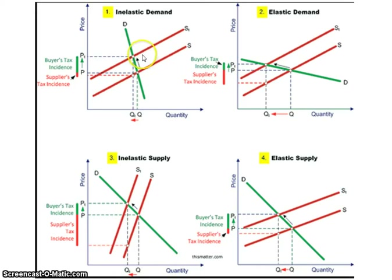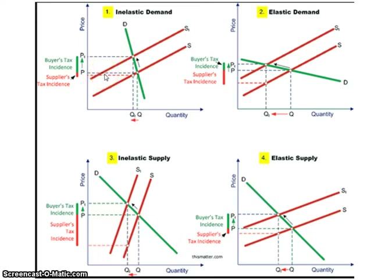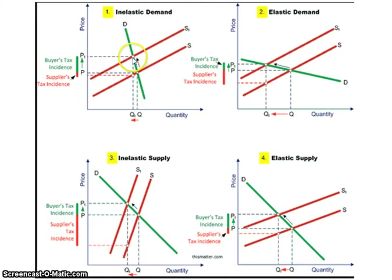When you shift your supply curve to the left because of the tax and look at the new quantity and new price that is created, you can see that the consumer has a much larger tax burden than the producer does. That's because they're willing to absorb that higher price — not a large number of people drop out and buy something different. The two boxes combined represent the total amount that goes to the government.